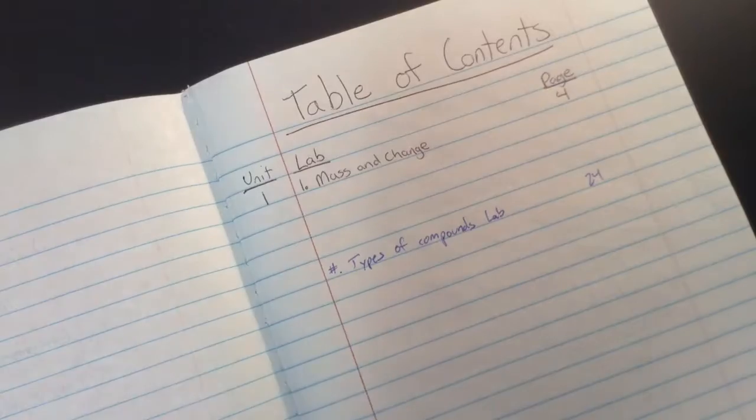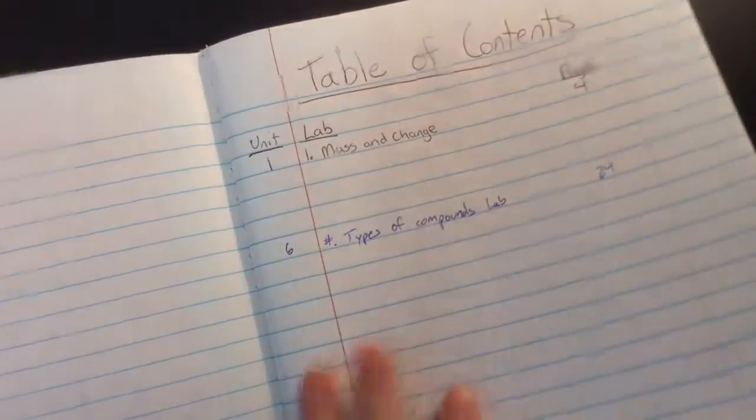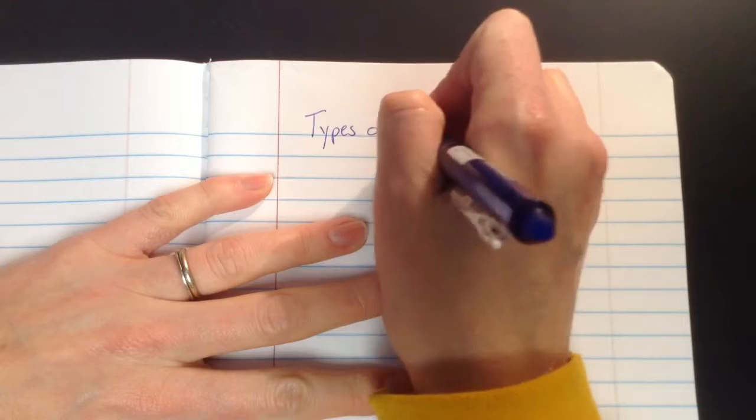I'll turn some light on here. There we go. So we're going to put that in there. This goes with Unit 6. So I'm going to flip over to page 24 here, and I'm going to get started. The first thing I need is my title. The title of this lab is Types of Compounds.